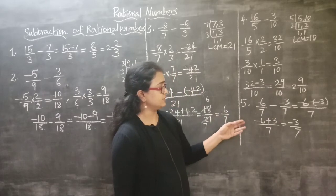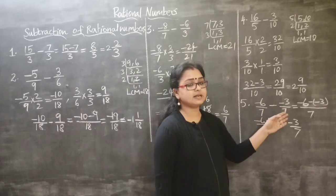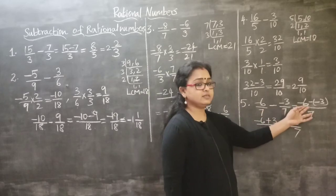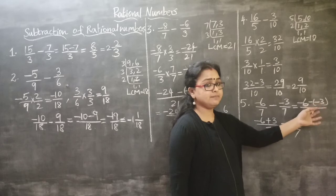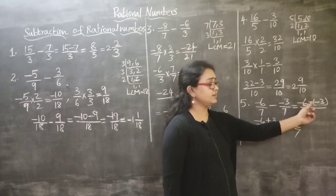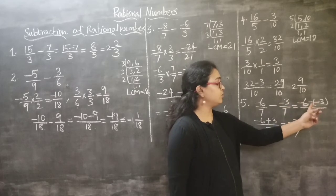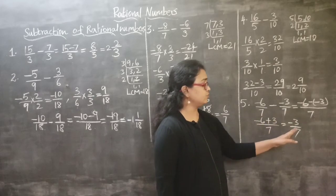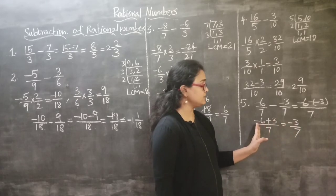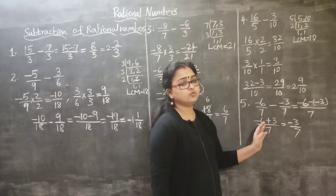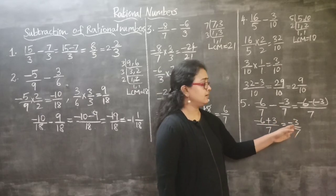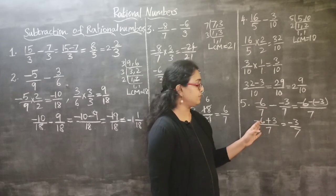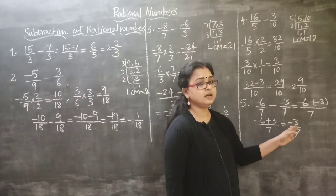The last example is minus 6 by 7 minus minus 3 by 7. These are like fractions with two negative rational numbers. Writing the numerators: minus 6 minus minus 3 by 7. Since minus into minus becomes plus, it becomes minus 6 plus 3 by 7. Since one number is negative and one is positive, we subtract: 6 minus 3 is 3. The answer carries a negative sign because 6 is the greater number and it is negative. So the answer is minus 3 by 7.